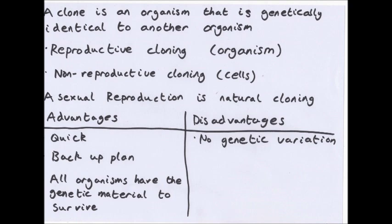Before discussing artificial cloning, we'll cover natural cloning, which is asexual reproduction. This includes mitosis in cells and binary fission in prokaryotes. This basically replicates the DNA, so you get two identical copies of that cell.